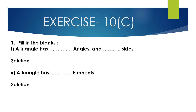Question number 1, fill in the blanks. First bit: a triangle has dash angles and dash sides. A triangle has 3 sides — AB, BC, and AC — and 3 angles: angle A, angle B, and angle C. So a triangle has 3 angles and 3 sides.